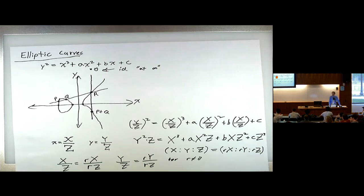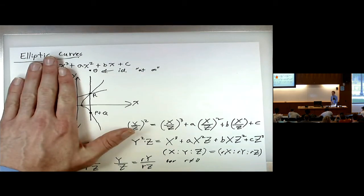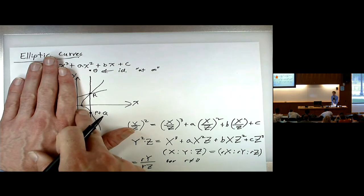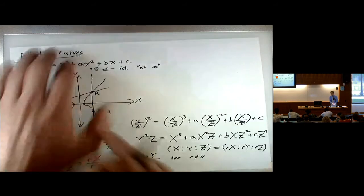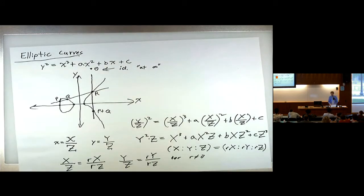A student asks: aren't the two conditions given — multiplicity and points at infinity — not sufficient for all lines and cubics to intersect at three points, since you also need to be over an algebraically closed field? Exactly right. For instance, if you look at the case with only one piece over the reals, you only have one point on the x-axis — the other two roots are in the complex part. It only works over an algebraically closed field to guarantee all three intersection points.